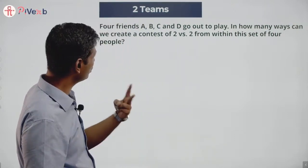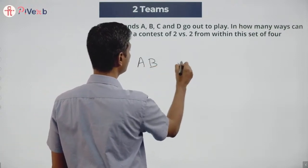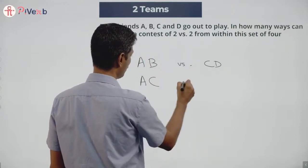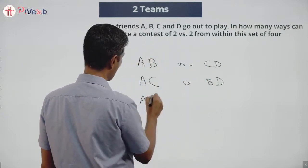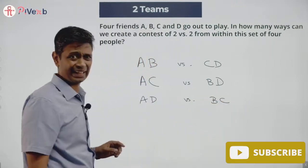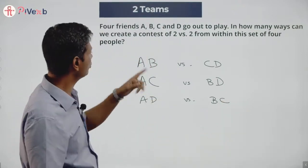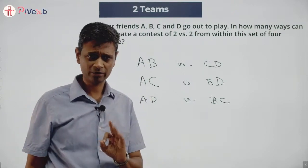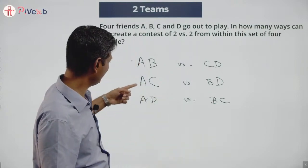A, B, C, D go out to play. I want to select a contest of two versus two. We could have A and B versus C and D, A and C versus B and D, A and D versus B and C. With A, I could pair up B, pair up C, or pair up D — three possibilities.